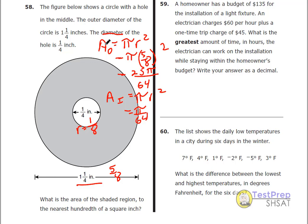So I subtract the outer area minus the inner area. That's going to be 25 minus one-sixty-fourths times pi, or 24 pi over 64, which reduces to three-eighths pi.